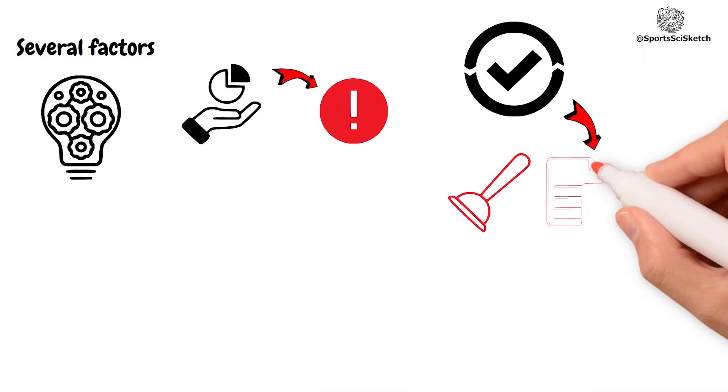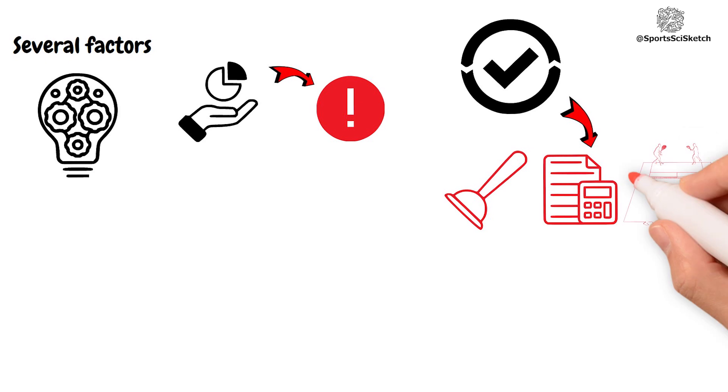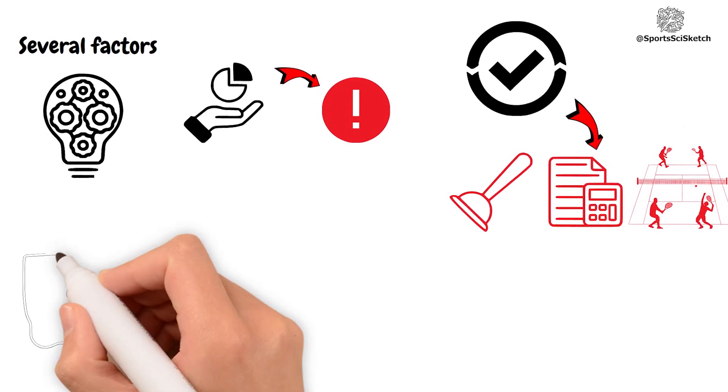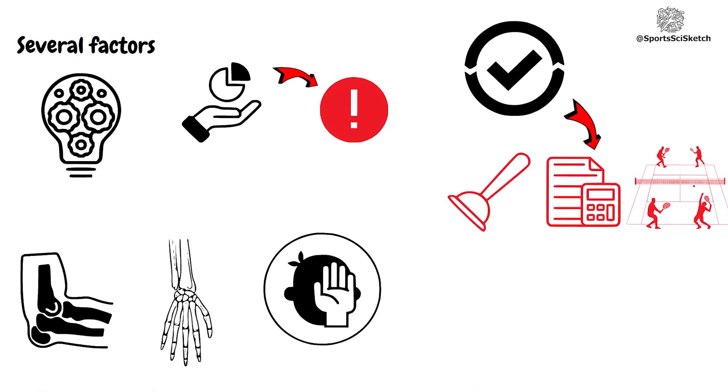These factors include occlusion, misestimation, and the capturing environment. Elbow and wrist joints often faced occlusion, leading to higher errors.